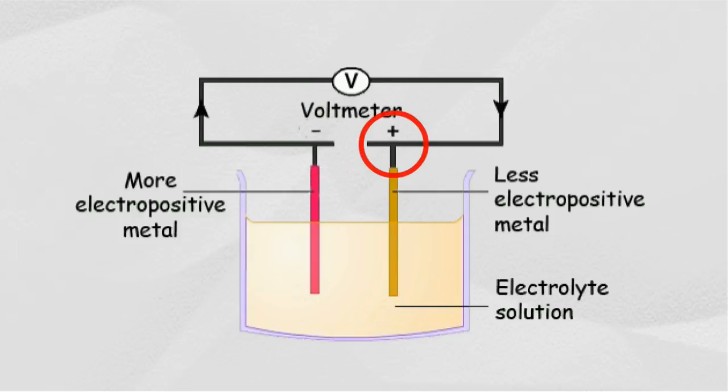At the negative terminal, the metal electrode will release electrons and dissolve to form metal ions. At the positive terminal, cations of a metal which is lower in its electrochemical series position will accept electrons and be discharged to form neutral atoms.